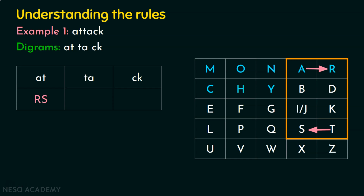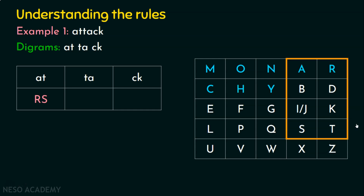Now let's encrypt the second digram, TA. T is here and A is here — we create the same rectangle. As per the rule, T is encrypted as S and A is encrypted as R. So TA is encrypted as SR. Note that AT and TA are different: AT gives RS and TA gives SR.